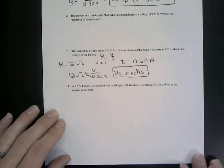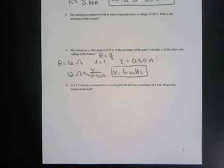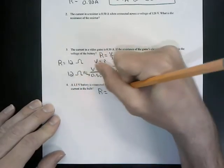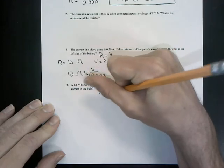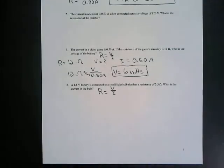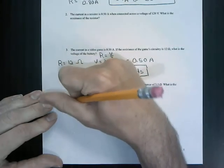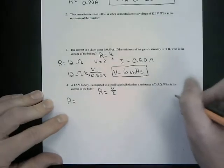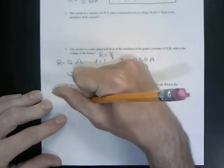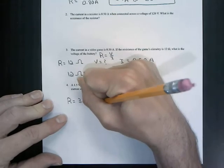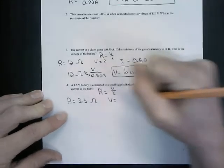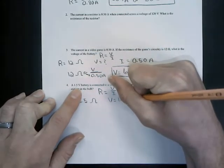So the last problem I'm going to do here is number four. So we're going to utilize the same formula of resistance equals volts divided by current. And so it says a 1.5 volt battery is connected to a small light bulb that has a resistance of 3.5 ohms. We want to know what is the current of the light bulb. So the resistance in ohms is given at 3.5 ohms.